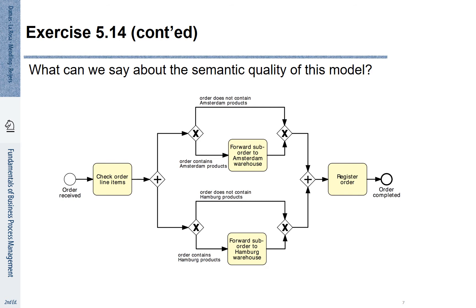So let's consider again our example of the orders that are forwarded as sub-orders to the Amsterdam and the Hamburg warehouse. Remember that was the example that we used to introduce the OR join and the OR split. The idea of that process is that we may have three situations. It may be that we forward sub-orders to Amsterdam. It may be that we forward sub-orders to Hamburg. And it may be the case that we forward sub-orders to both warehouses. However, it can never be the case that we forward no sub-order at all to any warehouse.